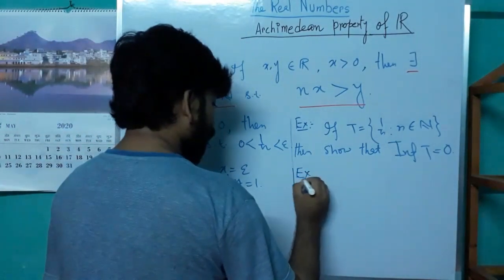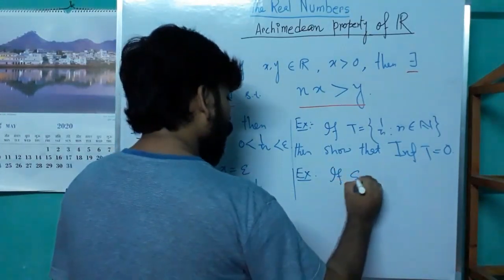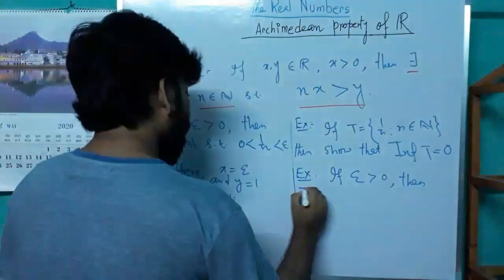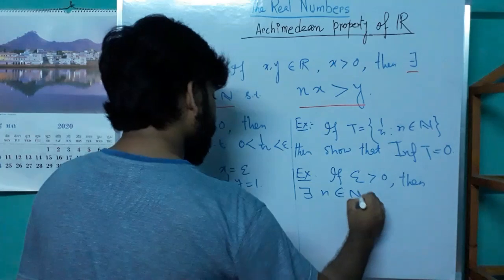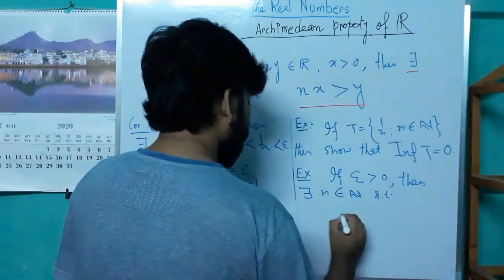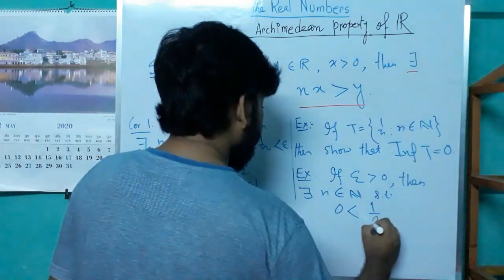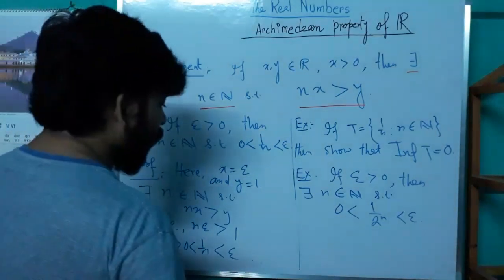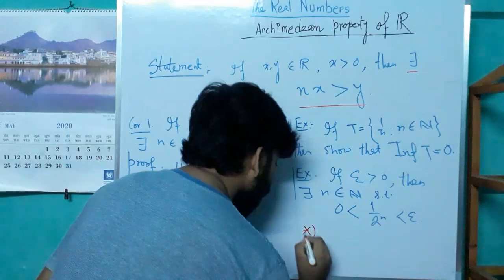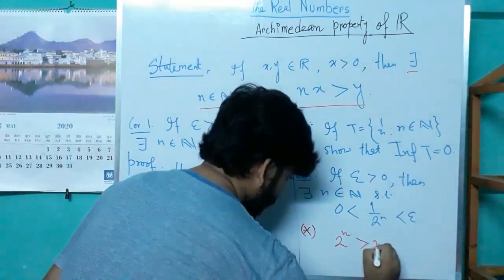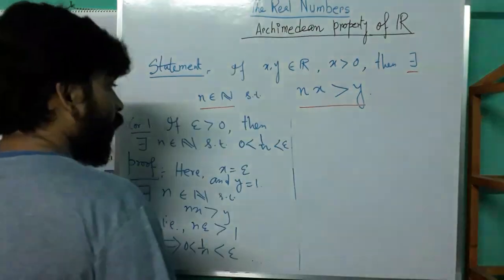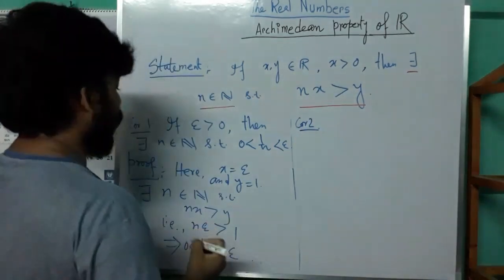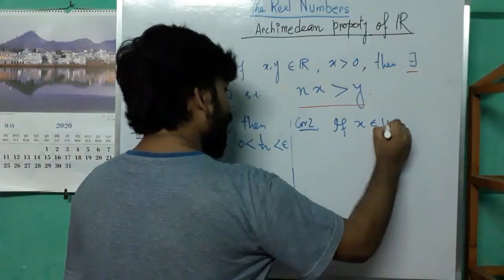Next exercise: if ε is any positive quantity, then there exists a natural number n such that 0 < 1/2ⁿ < ε. This exercise is easy if we keep in mind that 2ⁿ is strictly bigger than n.